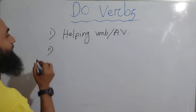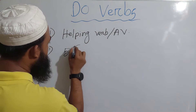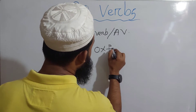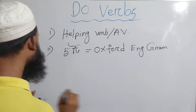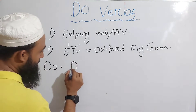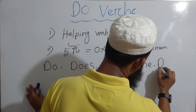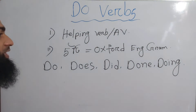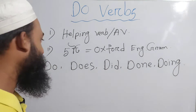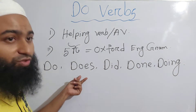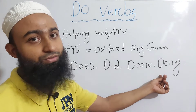First of all, according to the Oxford Dictionary and Oxford English Grammar, the do verb forms are: do, does, did, done, and doing. So here are the five do verbs we can use in English: do, does, did, done, and doing. This is the base form V1, or present form. Did is V2, done is V3, and doing is V4, which is the -ing form.